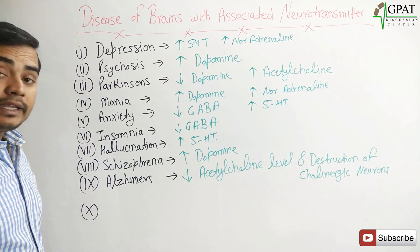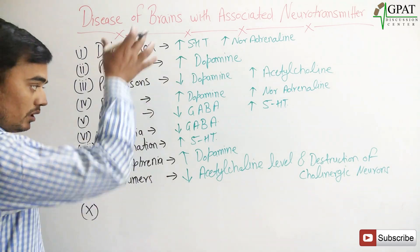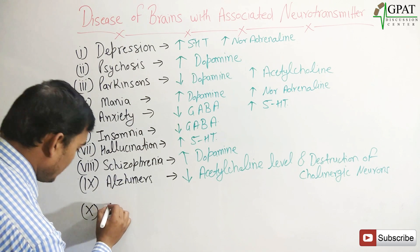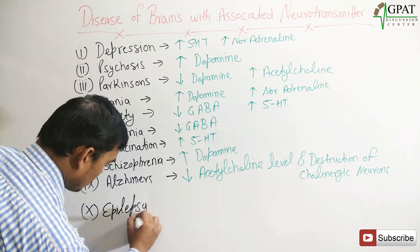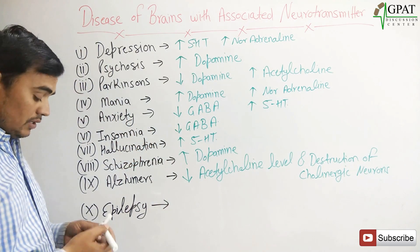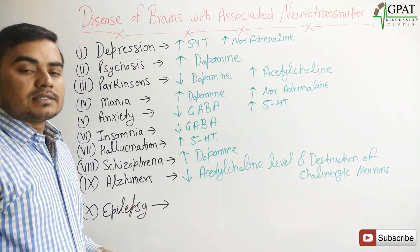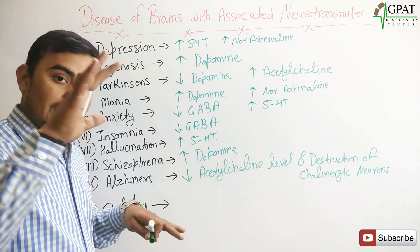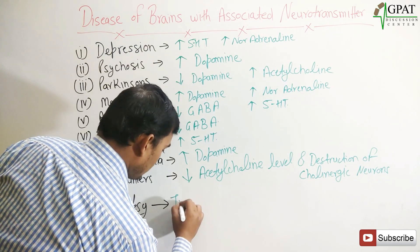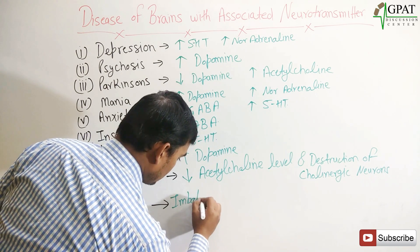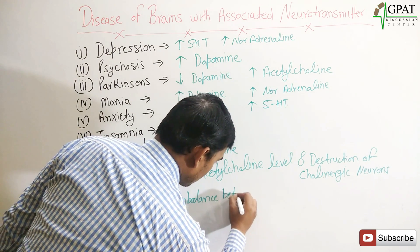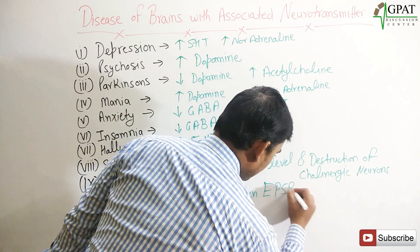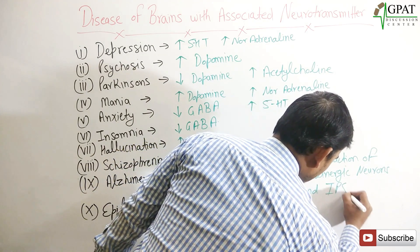All these diseases are mainly associated with the brain, and these are the neurotransmitters which affect brain functioning. The next disease is epilepsy, or in short, seizures. For epilepsy, the main reason is the imbalance between EPSP — excitatory post-synaptic potential — and IPSP — inhibitory post-synaptic potential. So here: imbalance between EPSP and IPSP.